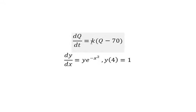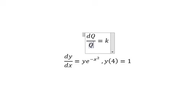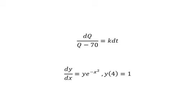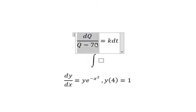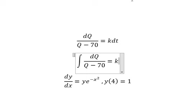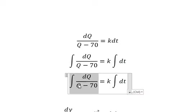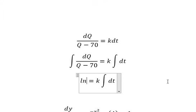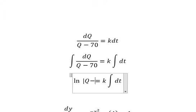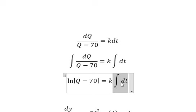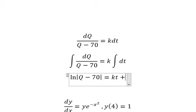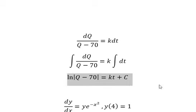The next one: we put this one go to the left, dt we put on the right. Next we put the integration for both sides. The integration of this one gives us ln of the absolute value of q minus 70. The integration of dt gives us t, and we put about c. And this is the final answer.